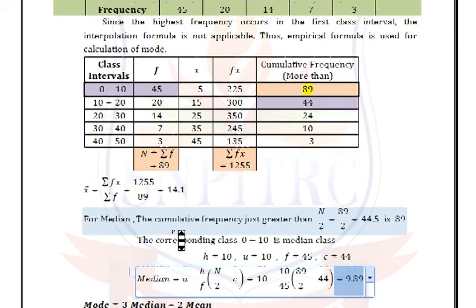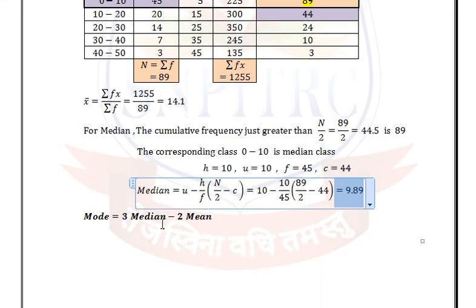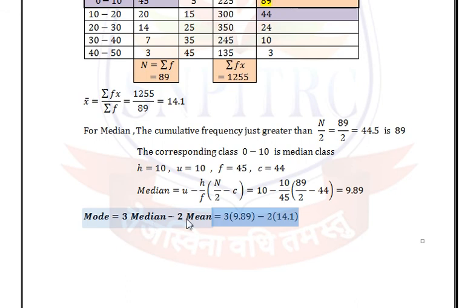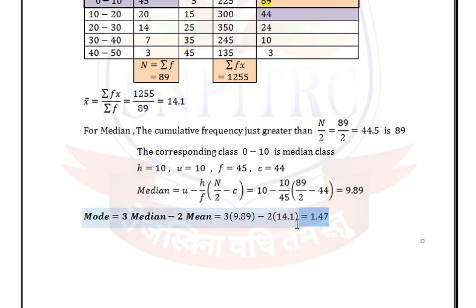Substituting the values of mean and median into the empirical formula: Mode = 3 × 9.89 − 2 × 14.1, so mode is equal to 1.47.